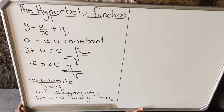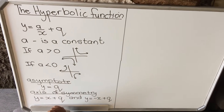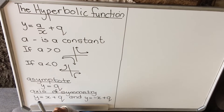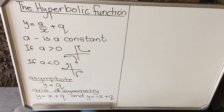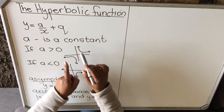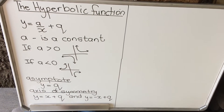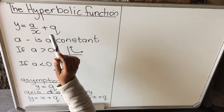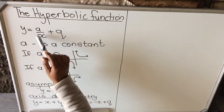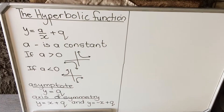Hello Grade 10s, this is a lesson on functions. We are going to look at the hyperbolic function. A hyperbolic function is also called a hyperbola. To remember it, it's different from a parabola — when you look at these two things like that, they form an H, so remember the one that forms an H is a hyperbola. The general formula of a hyperbolic function is y equals a over x plus q, where you have a fraction and the x is in the denominator.